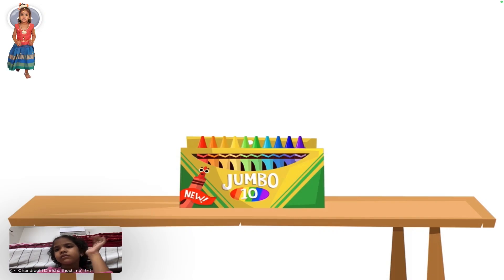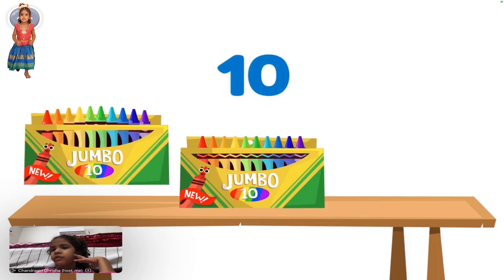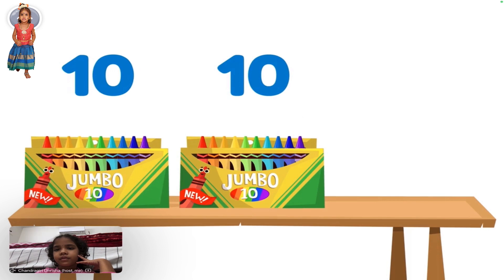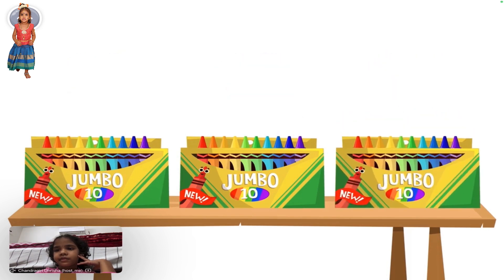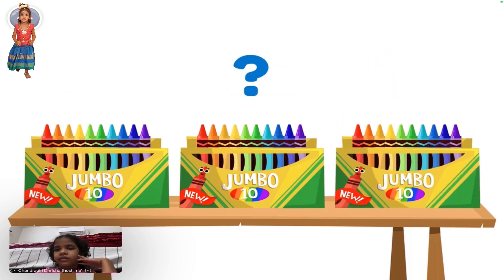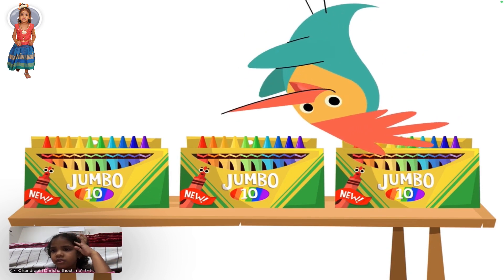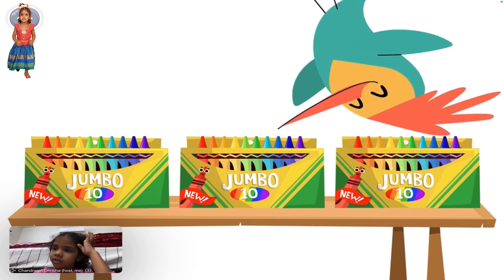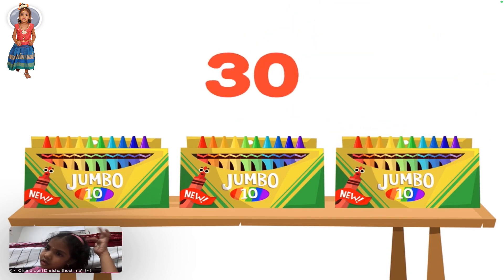This is one box of ten crayons. This is another and another. How many crayons are there altogether? There are three boxes of ten. That means there are thirty crayons.